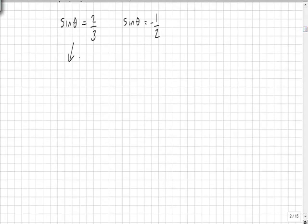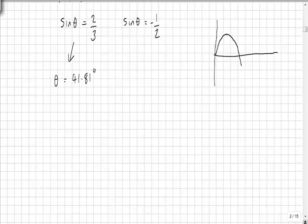So if we examine our first value of theta, sin theta is 2 thirds, the first value of theta would generate is 41.81 degrees. At this stage, let's just draw a quick sketch of a sine wave, just so we can look at the symmetry of the graph.